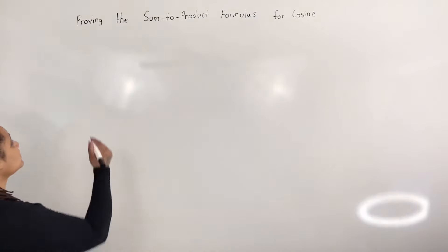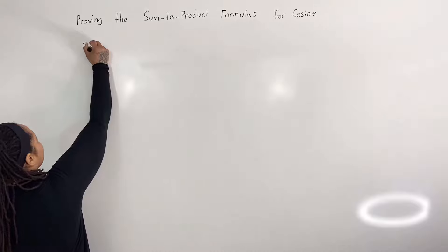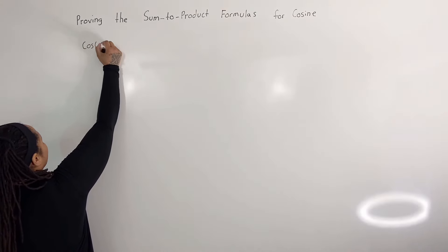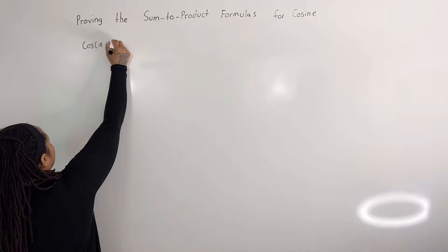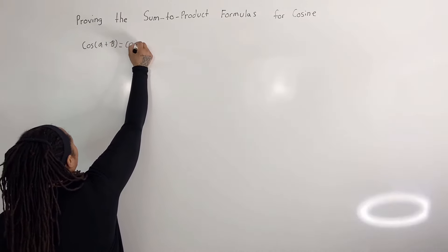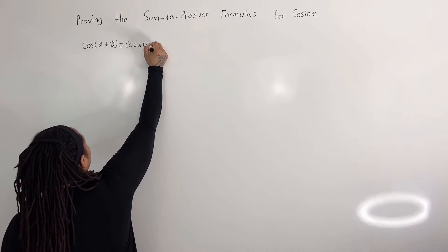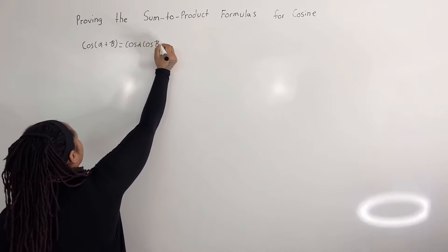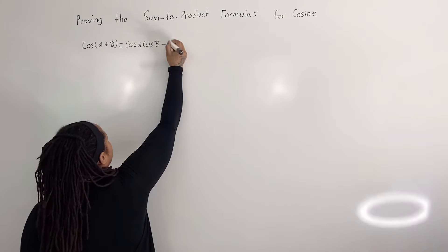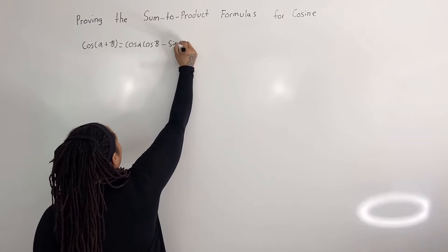We know that cosine of alpha plus beta is equal to cosine of alpha cosine of beta minus sine of alpha sine of beta.